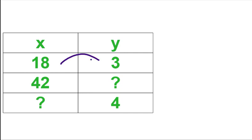So if I'm going from that 18 to the 3, am I multiplying or dividing? Dividing by? So if I'm dividing by 6 right there, guess what I'm doing right there? Yeah, dividing by 6. So what's 42 divided by 6? So that's a 7 right there.